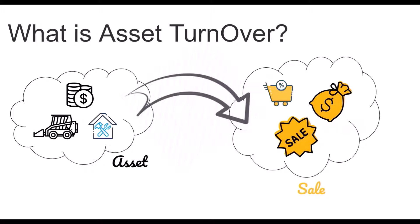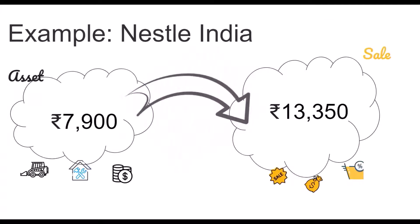So first you need to have an asset, and when you have an asset then you make a sale. Asset turnover is how you are turning over your asset — how you are utilizing it. Let's take an example of Nestle India, which had an asset of 7,900 crores, and that year Nestle India made a sale of 13,350 crores.